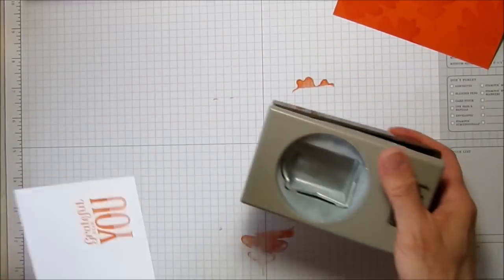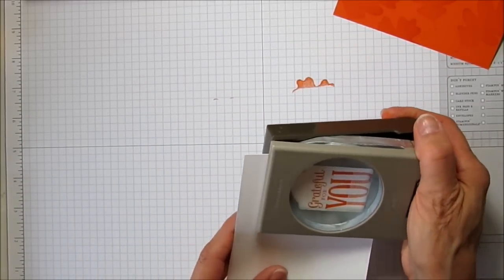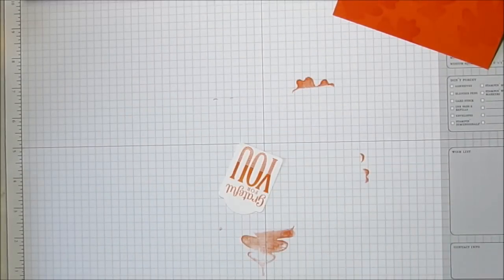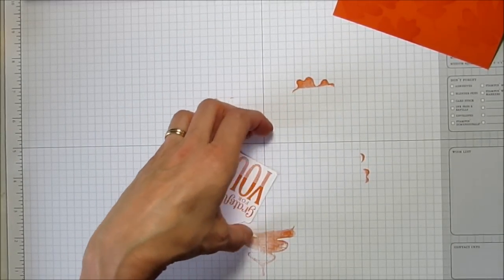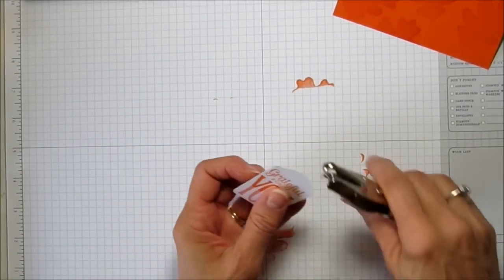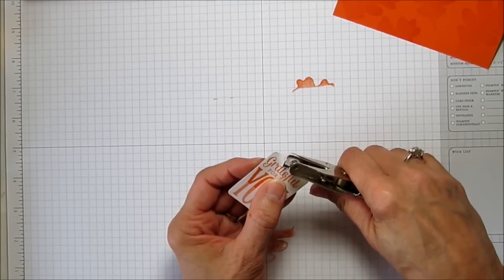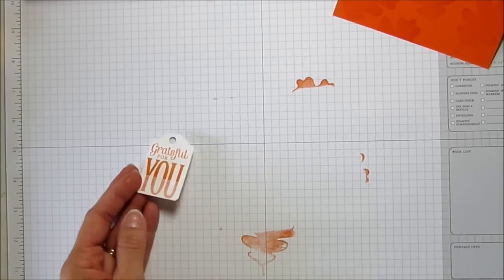I'm going to use the note tag punch and I'm going to go ahead and just punch that out. And then I'm going to use a regular hole punch and I'm just going to punch a hole right in the top of this. I need to string my ribbon through that.